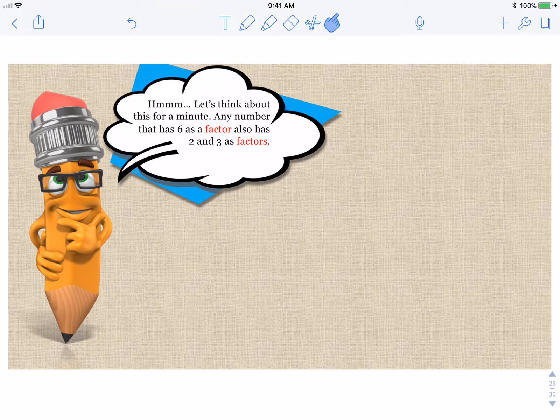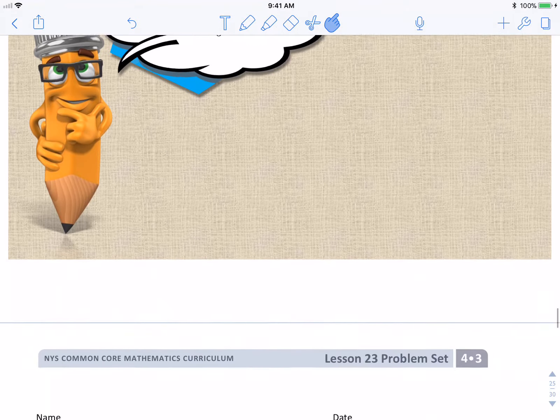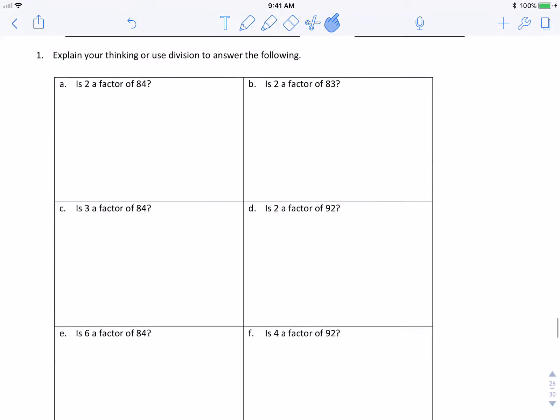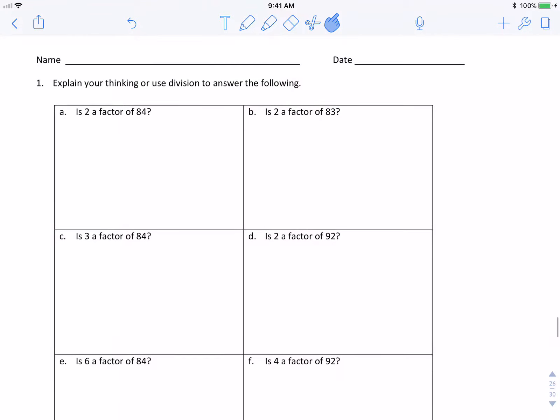We're also kind of figuring out by this whole lesson that if 6 goes into a number, then 3 and 2 also go into it. If both 2 and 3 go into a number, then 6 also goes into it. Let's think about this for a minute. Any number that has 6 as a factor also has 2 and 3 as factors.